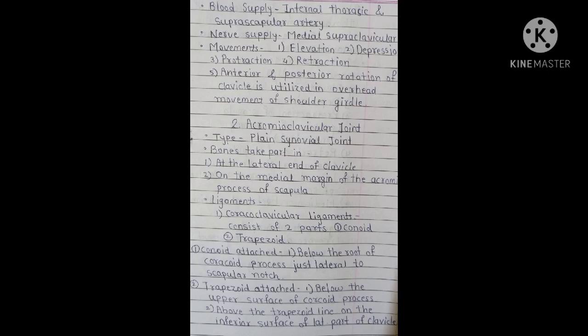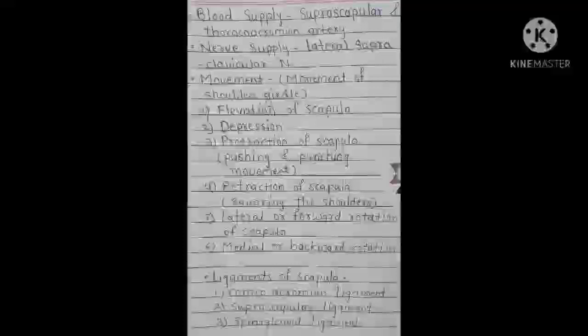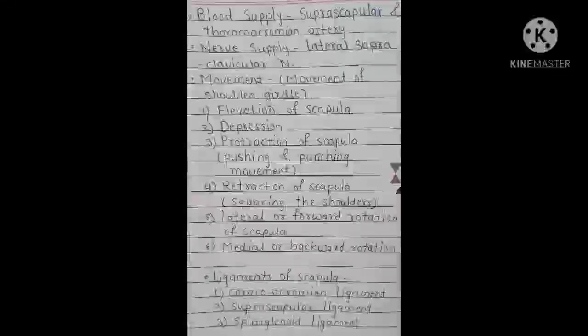The trapezoid part is attached below the upper surface of the coracoid process, above the trapezoid line, on the inferior surface of the lateral part of the clavicle. Blood supply is from the suprascapular and thoracoacromial artery. Nerve supply is the lateral supraclavicular nerve.